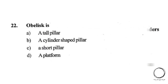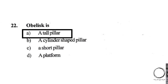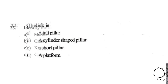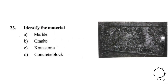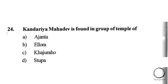Next: an obelisk is: A) A tall pillar, B) A cylinder-shaped pillar, C) A short pillar, D) A platform. The right answer is A, a tall pillar. Moving on: identify the material shown in the image. Options: A) Marble, B) Granite, C) Kota stone, D) Concrete block. The right answer is B, Granite.